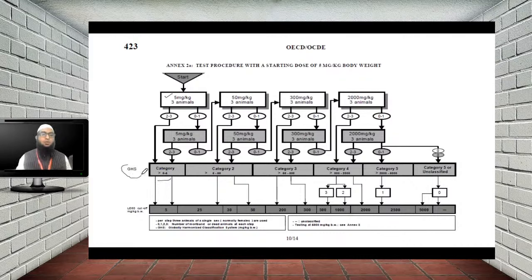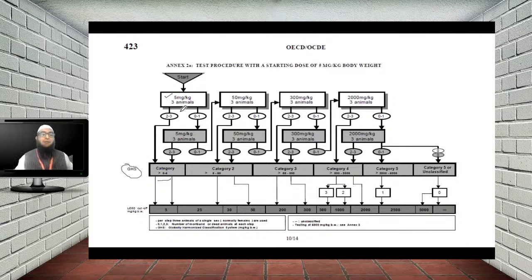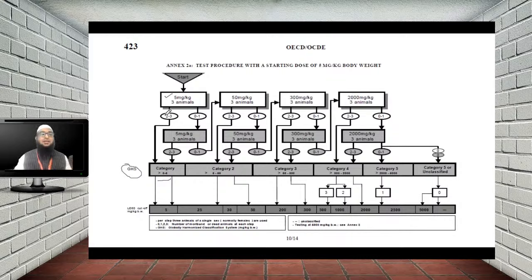This is the GHS (Globally Harmonized System) category, which classifies chemicals and drugs into different categories based on toxicity. If death or toxicity occurs in 2 to 3 out of 3 animals at 5 mg/kg, the drug is classified as GHS category 1 (0–5 mg/kg).